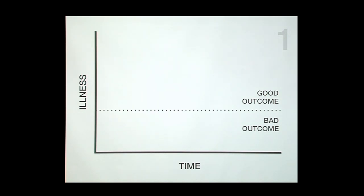Now I'll add a layer of complexity: what if time is of the essence? What if I don't have time to sit at the bedside, reason through considerations, and apply multiple tests one at a time? When seconds count and it's a matter of life and death, I need a different framework. I've made a schematic — a graph with illness on the y-axis and time on the x-axis — with an arbitrary line separating good outcomes above from bad outcomes below.